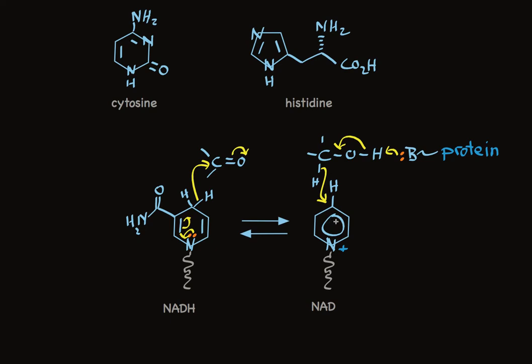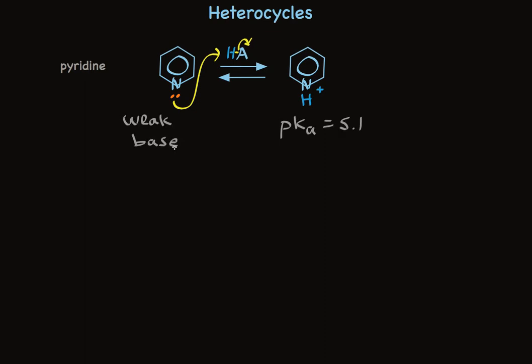Heterocycles occur widely in nature in important roles. As you would expect, these amine heterocycles can act as bases. For example, pyridine has a lone pair of electrons here. That can be protonated. The pKa of the conjugate acid of this base is 5.1. In other words, pyridine is a weak base. Nitrogen is sp2 hybridized, and the electrons in that sp2 orbital are held rather tightly. Nevertheless, we commonly use pyridine as a base in organic chemistry when we want to remove protons released by strong acids.